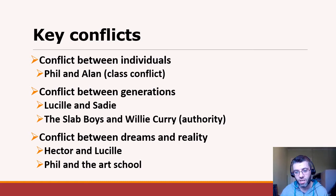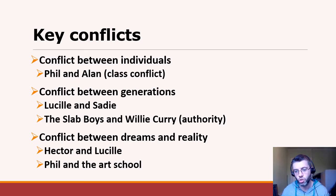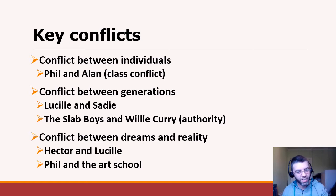If you've got four or five examples you'll always be able to answer the final question in the exam if your conflict comes up. Examples of the conflicts we see: there's obvious conflict between individuals, and they manifest in different ways. The most obvious one is Phil and Alan, but that's also a manifestation of class conflict — themes around class differences or opportunities. There will be quite a lot of overlap, because themes and conflicts and characters don't exist in isolation in a text; they're all interconnected.